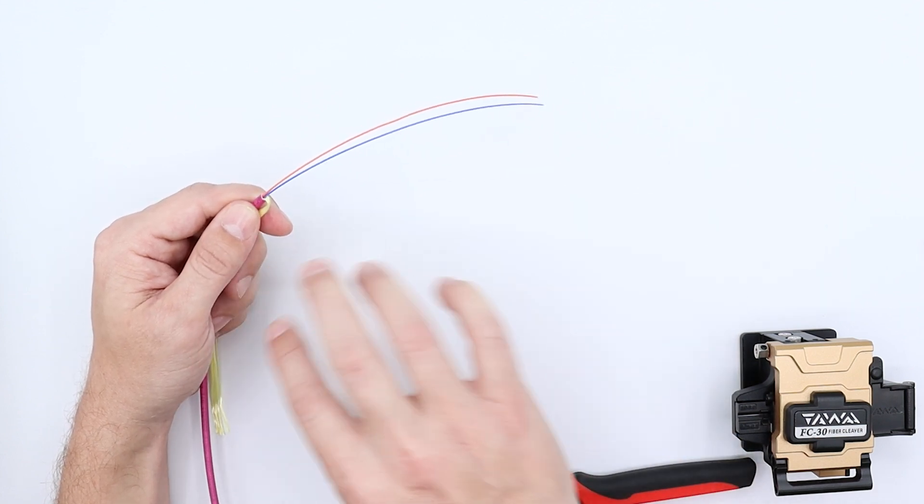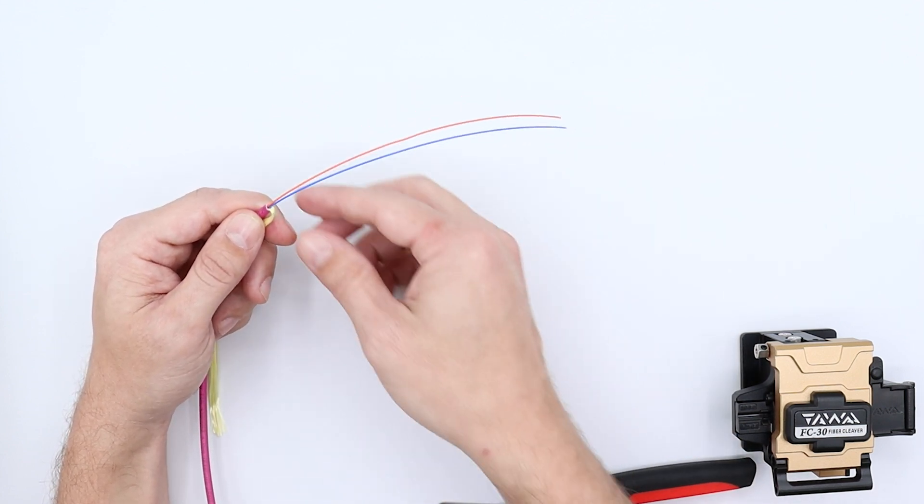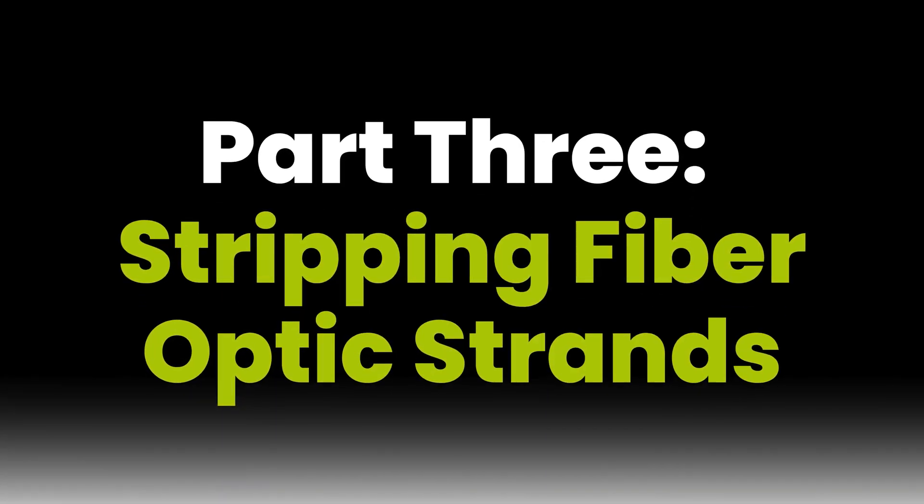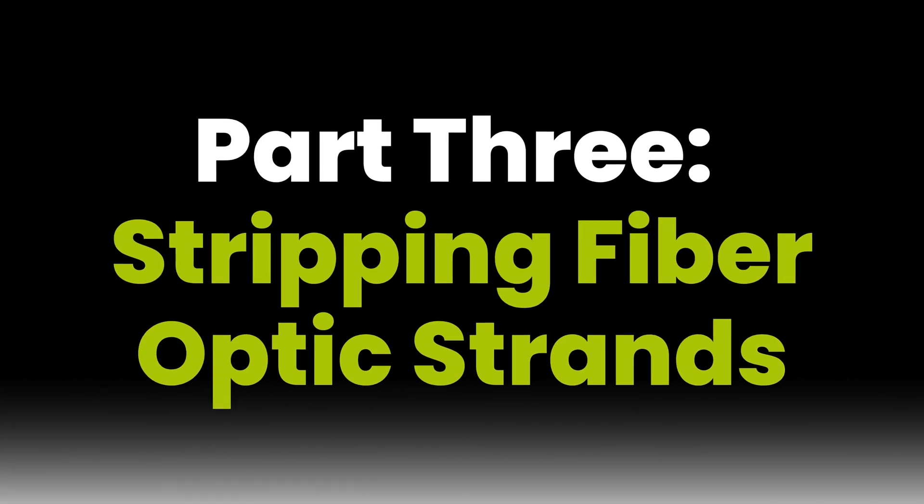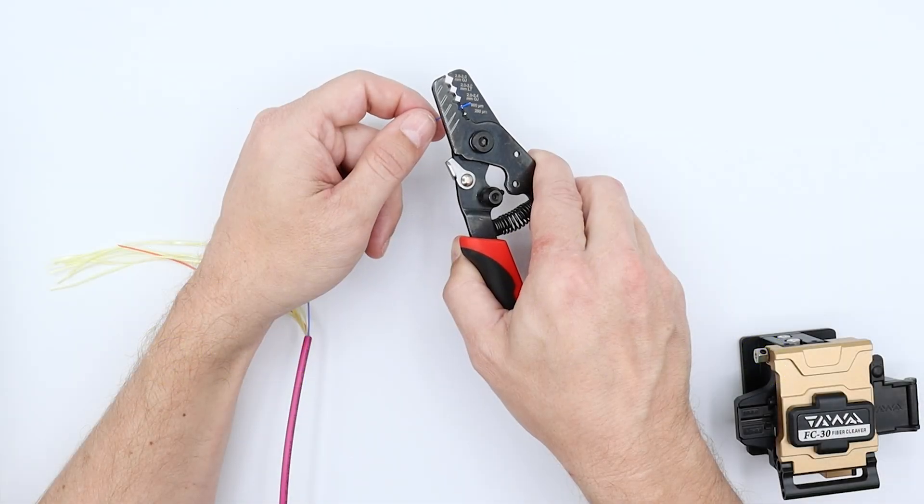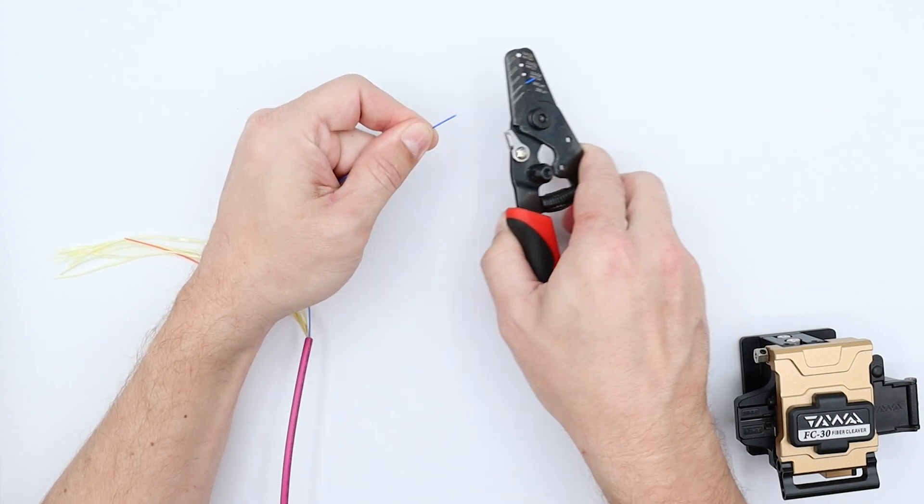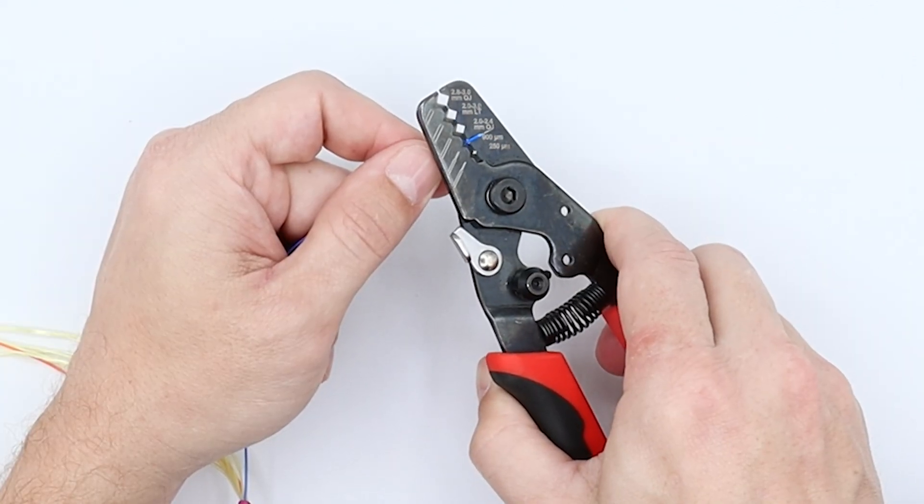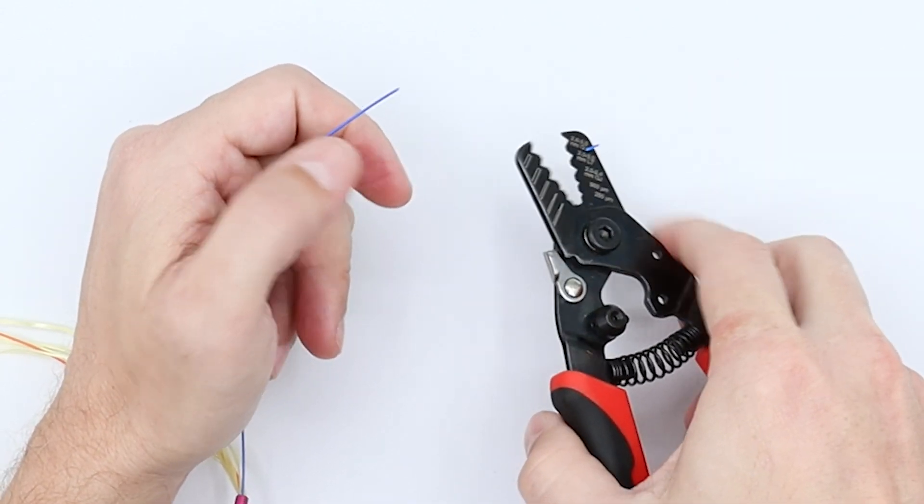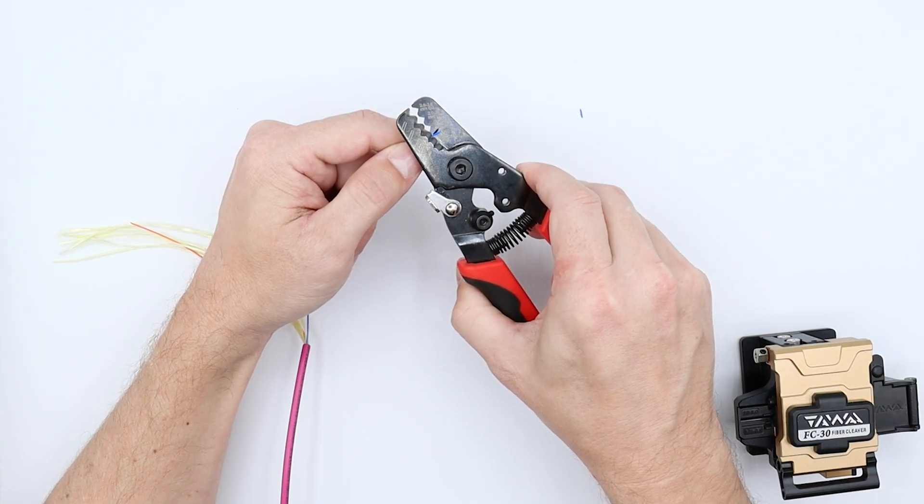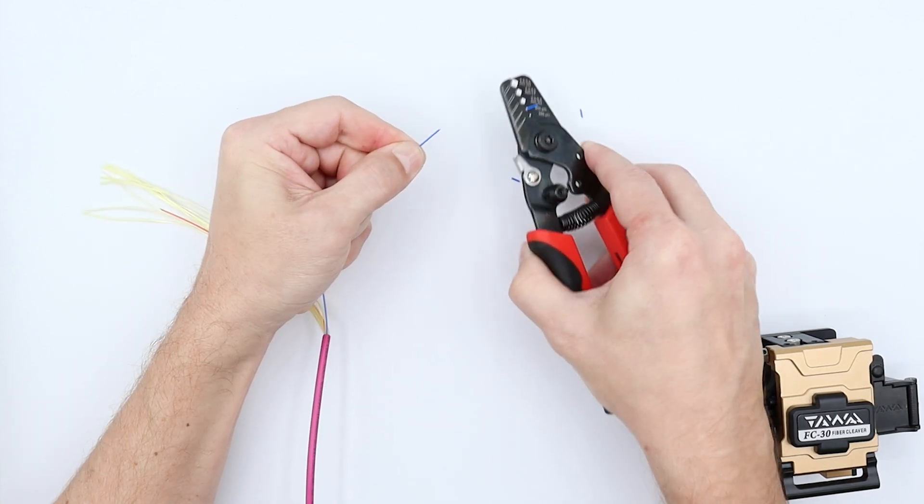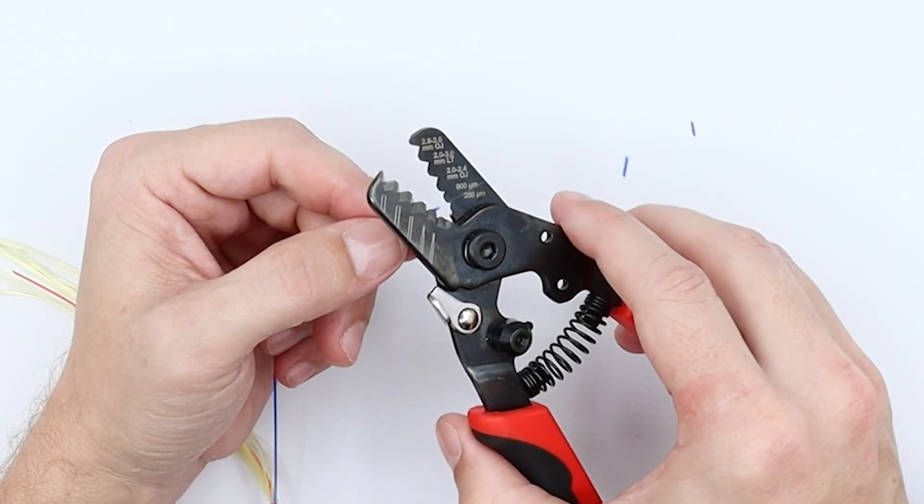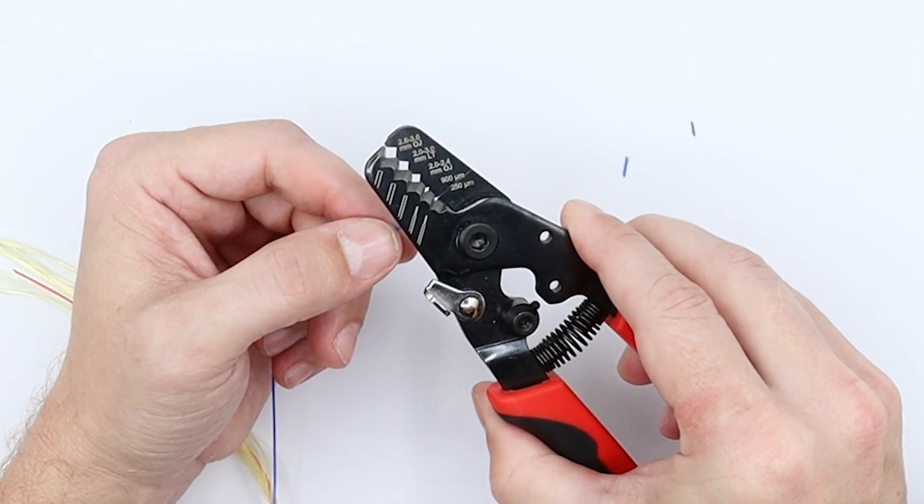Sometimes it's cut off, other times it's used on the connector assembly part to strengthen that connection with the connector. For now we'll stick it aside. We're going to just show stripping of one of these strands. We'll go ahead and start stripping this back using the 900 micron part of the stripper, and we'll take it back to about an inch. It's a bit tedious part of the job here.